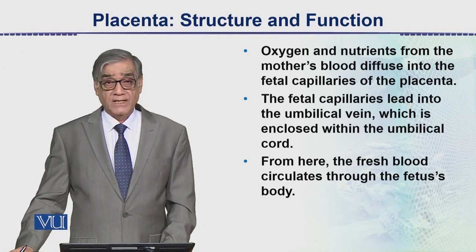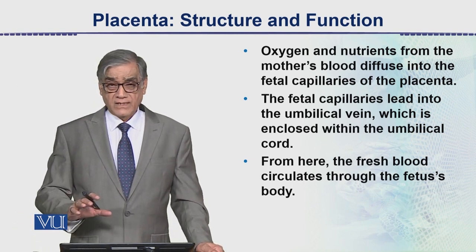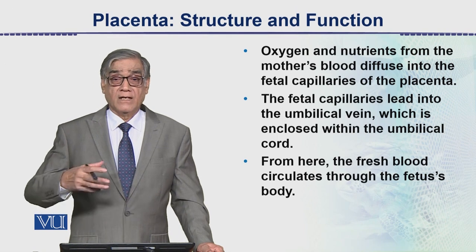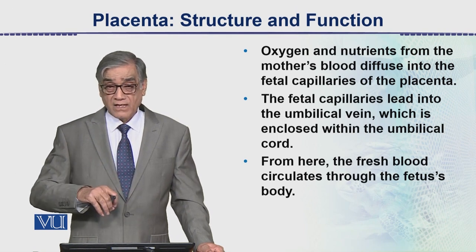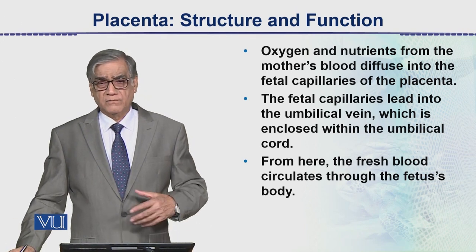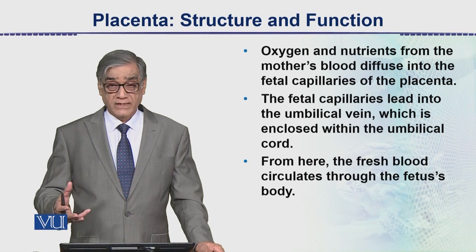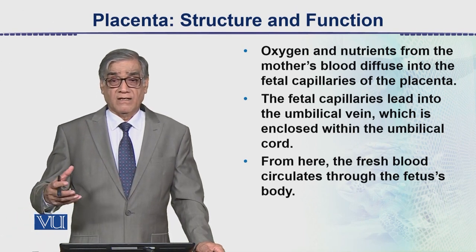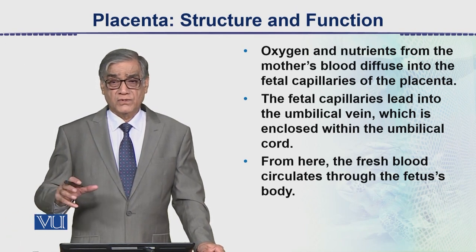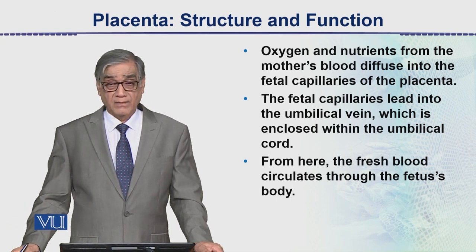Oxygen and nutrients from the mother's blood diffuse into the fetal capillaries of the placenta; the fetal capillaries lead into the umbilical vein enclosed within the umbilical cord. From here the fresh blood circulates to the fetus body. So we have seen the structure, the definition, detailed structure including blood circulation, and the multiple functions of placenta. There is a lot of research happening on placenta nowadays, including its use for creating immunity.